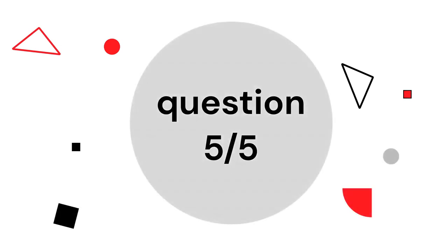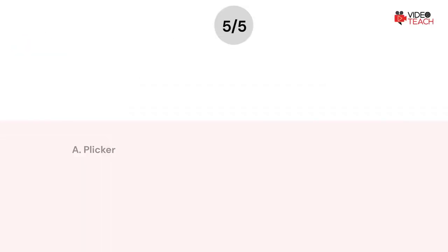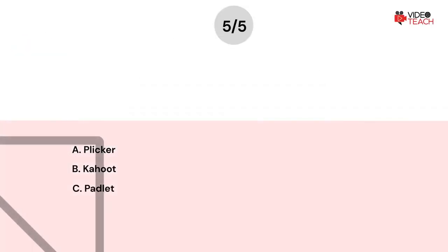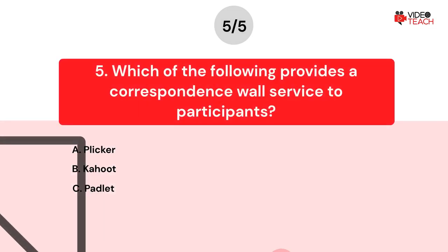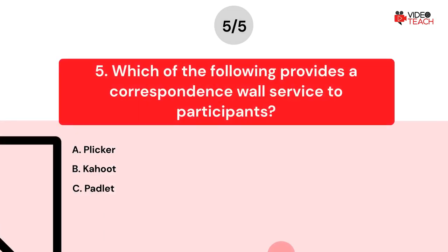Question number five. Which of the following provides a correspondence wall service to participants? Option A: Clicker. Option B: Kahoot. Option C: Padlet.